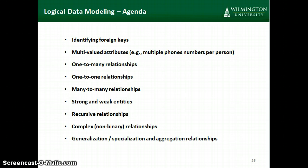When doing logical data modeling, we need to identify the foreign keys — those attributes in one entity that match back to a row in another entity. This is the one difference between logical and conceptual modeling; at the conceptual level, we usually don't go to the level of detail of identifying foreign keys. We also need to resolve multi-valued attributes. At the conceptual level we might not yet know we need multiple values for a phone number, but in logical data modeling we typically would, because multiple values are not allowed in individual cells in our physical tables.